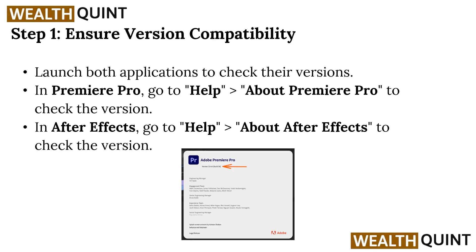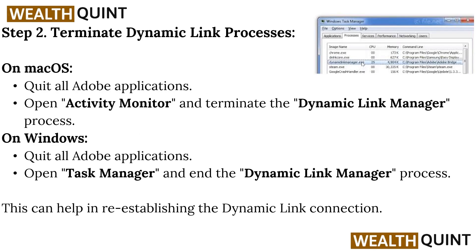In After Effects, go to Help, then click on About After Effects to check the version. Step 2: terminate Dynamic Link processes. On Mac OS, quit all Adobe applications and open the Activity Monitor, and terminate the Dynamic Link Manager process.